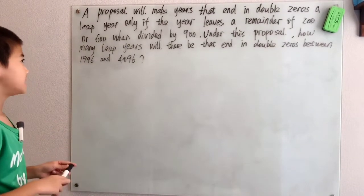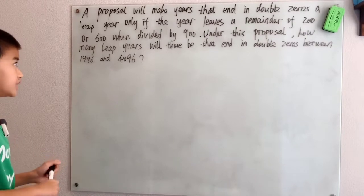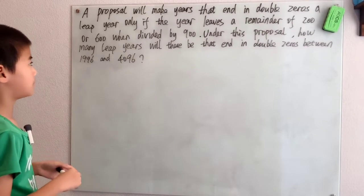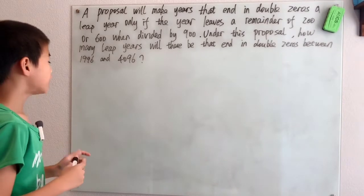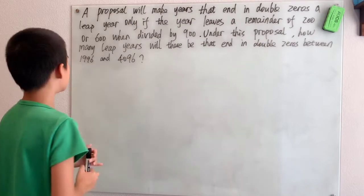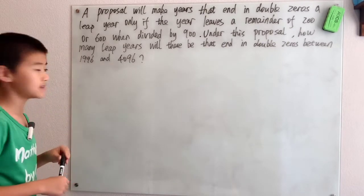A proposal will make years that end in double zeros a leap year only if the year leaves a remainder of 200 or 600 when divided by 900. Under this proposal, how many leap years will there be that end in double zeros between 1996 and 4096?